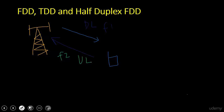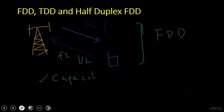The advantages of FDD: if you have a paired spectrum, FDD deployment is good. If you have symmetric utilization of both uplink and downlink, FDD deployment works well. Since you are using a paired spectrum band, the capacity in FDD turns out to be better compared to TDD and Half Duplex FDD.